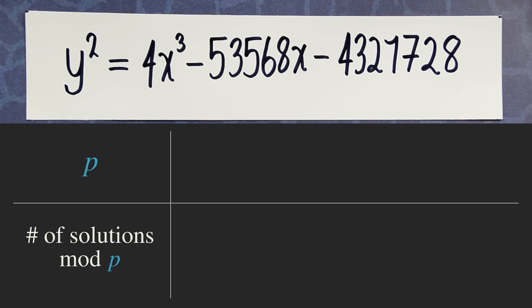For p equals 2, there are 5 solutions. For p equals 3, there are 5 solutions. Likewise, you can fill this out for all primes p. Now, this list of numbers doesn't look too interesting at the moment.